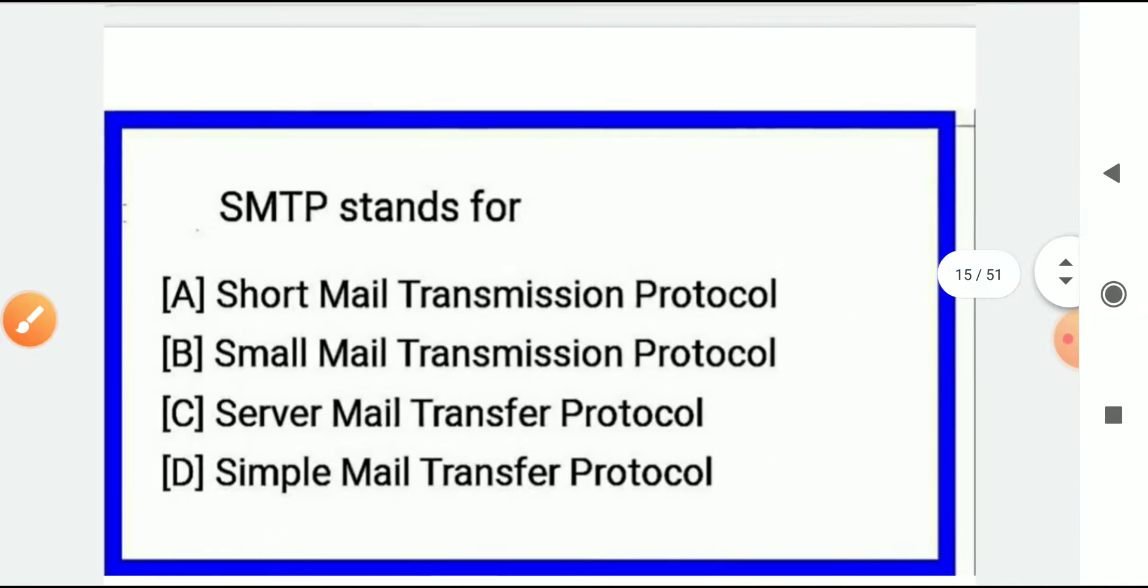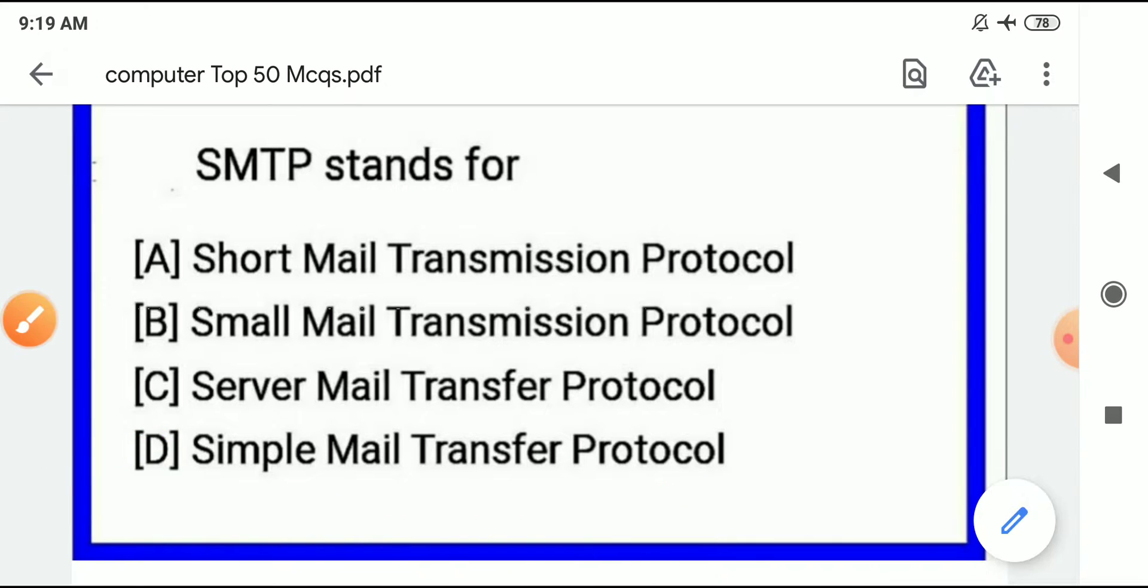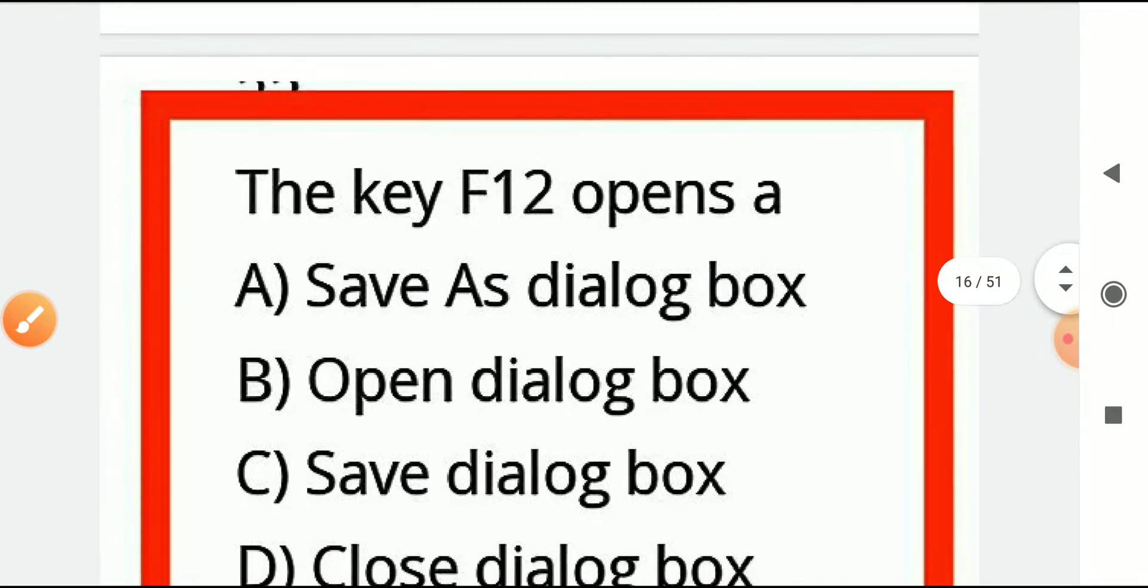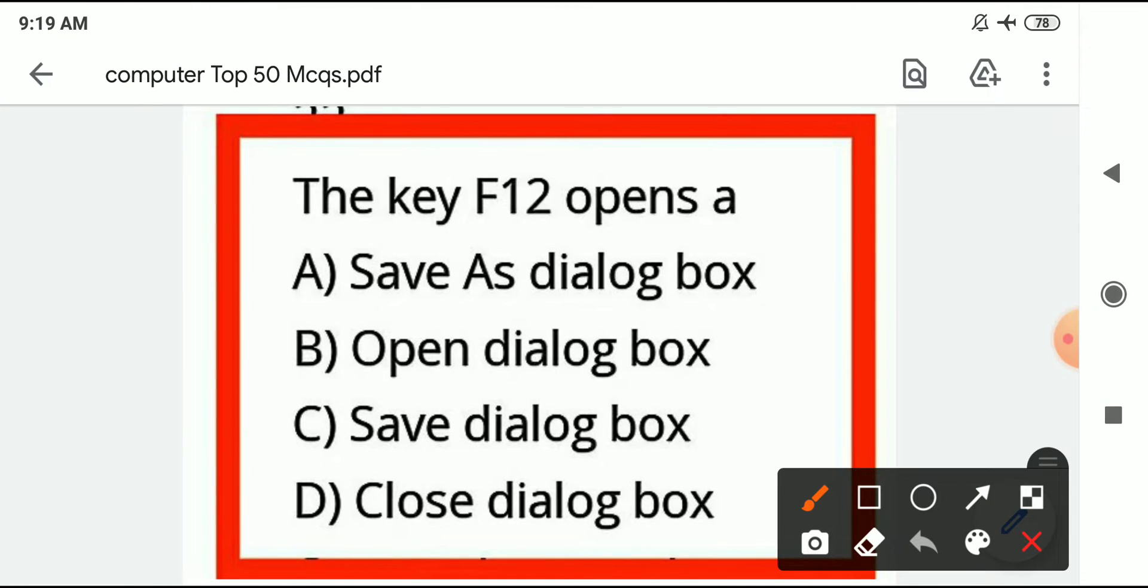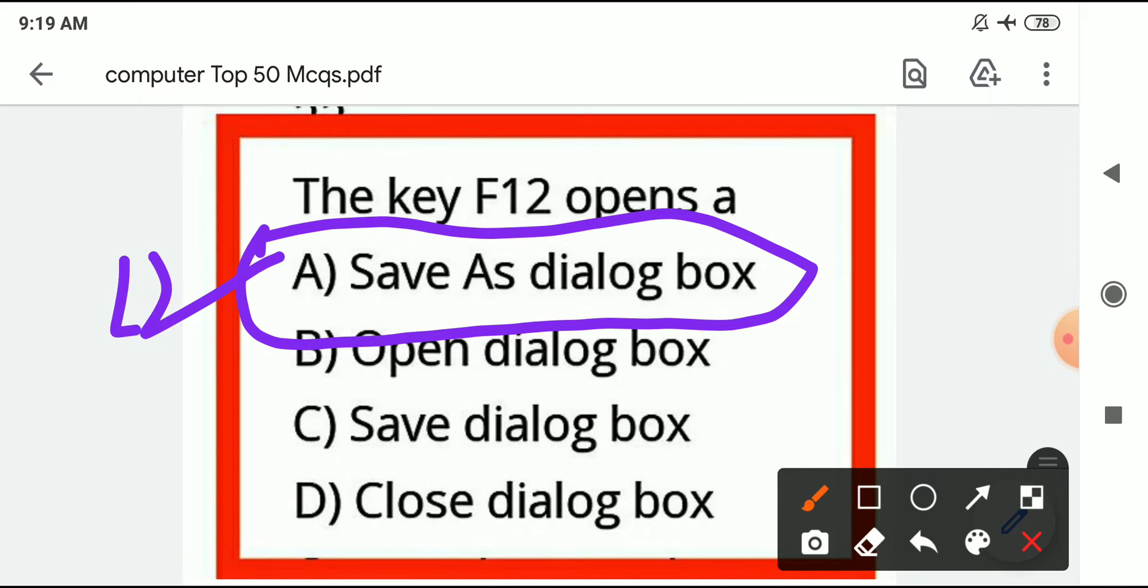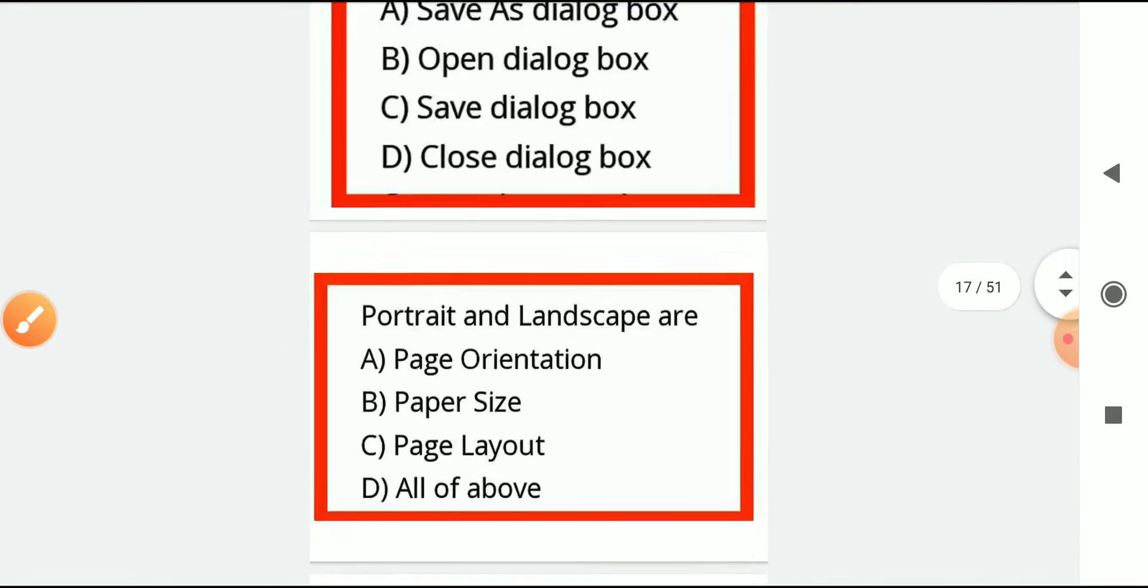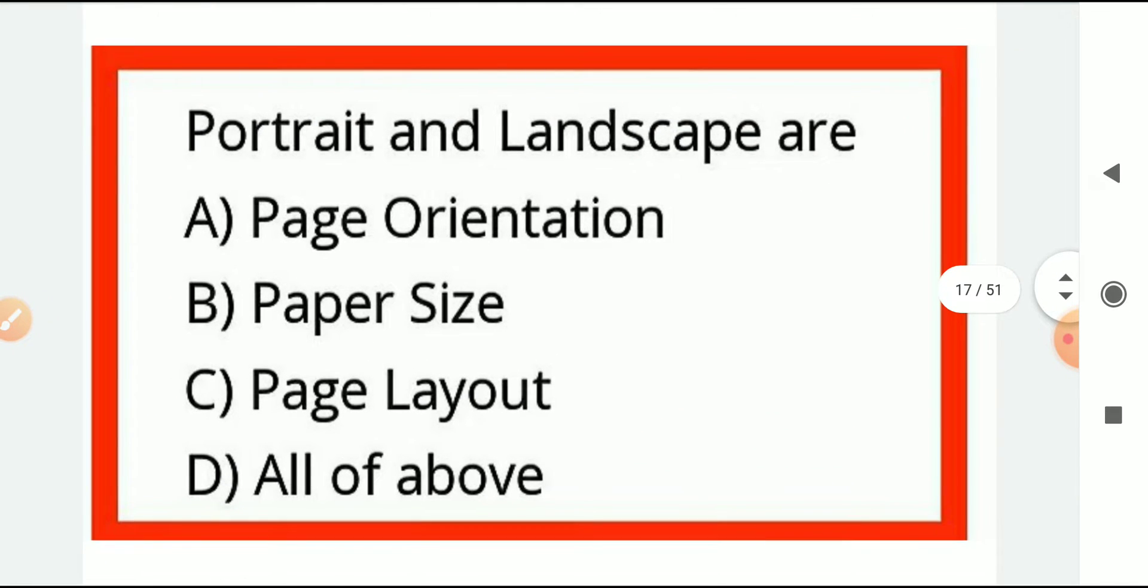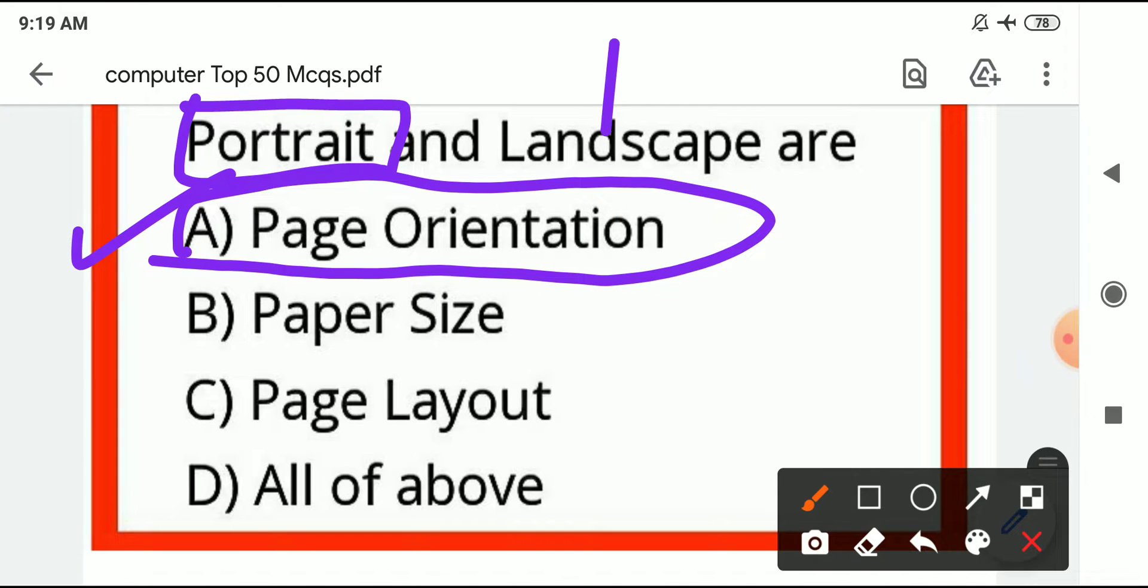SMTP stands for Simple Mail Transfer Protocol. The key F12 opens - if you press F12, what will be open? Save as dialog box. F12 to save as dialog box. Portrait and landscape - what are these? Page orientations. Two types of page orientations: one is portrait and the other is landscape.